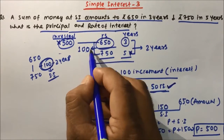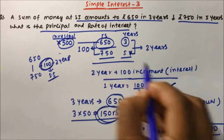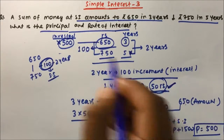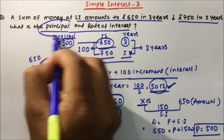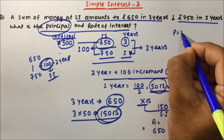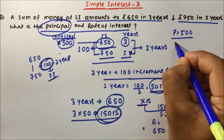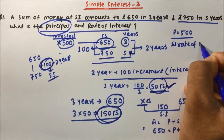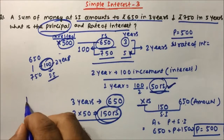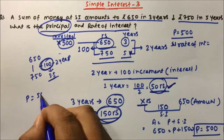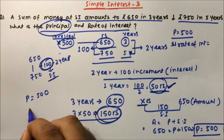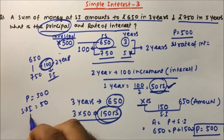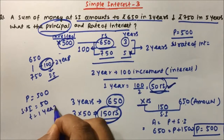The interest is 50 rupees per year. We got the principal, which is 500 rupees. Now we have to calculate the rate of interest. Principal is 500, interest is 50 rupees simple interest, and time is 1 year.